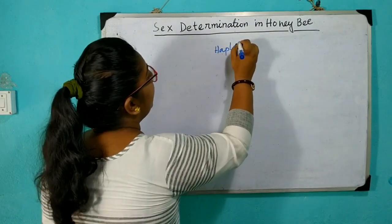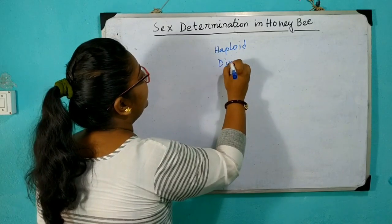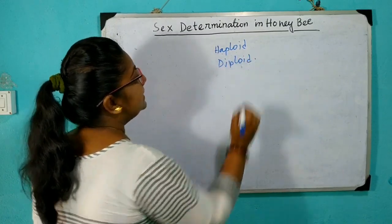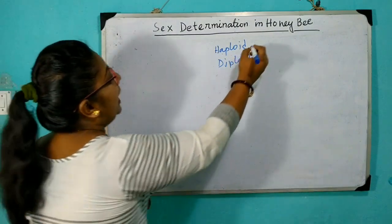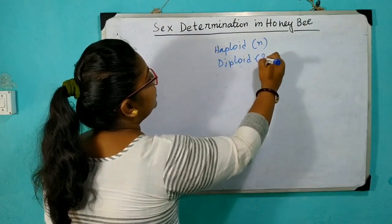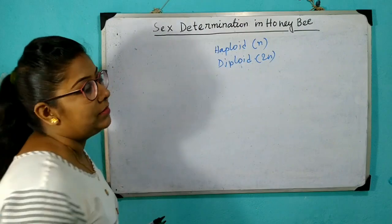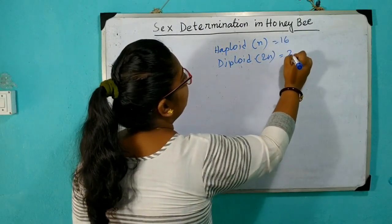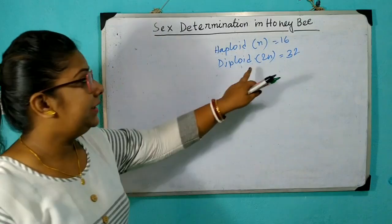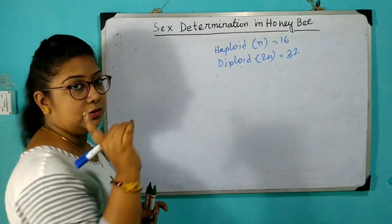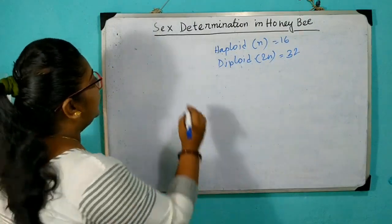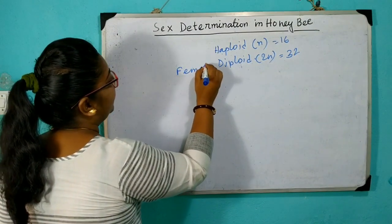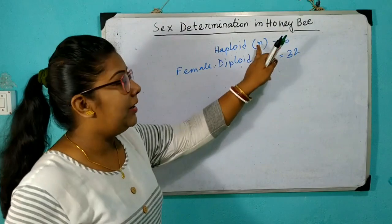Sex determination depends on the haploid and diploid number of chromosomes. Haploid is n number of chromosomes and diploid is 2n number of chromosomes. In honeybee, n is 16, so the diploid number 2n is 32. The diploid number of chromosomes corresponds to the female character.